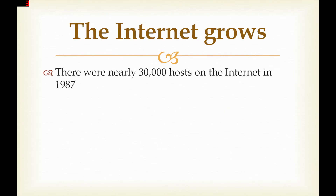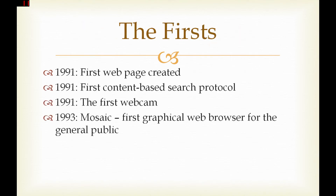The internet grows. There were nearly 30,000 hosts on the internet in 1987. In 1991, the first webpage was created. Also in 1991, the first content-based search protocol was introduced. And again in 1991, the first webcam appeared.